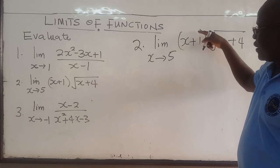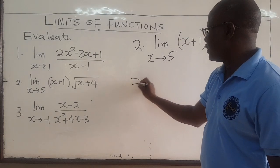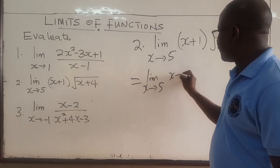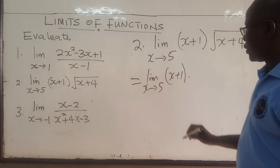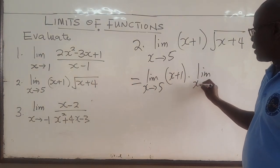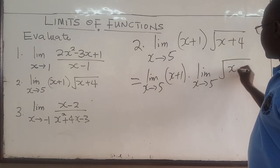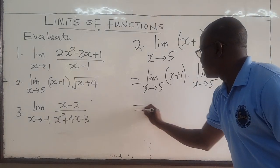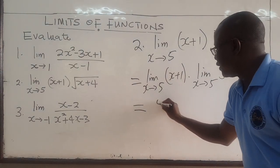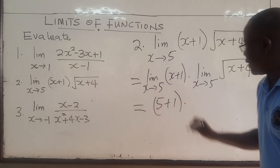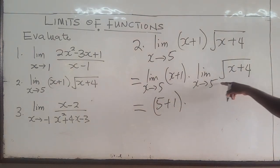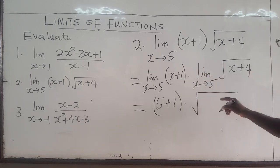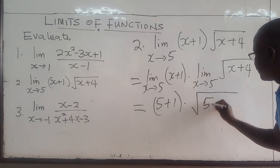So you can find the limit of this times the limit of that. This can be written as the limit as x approaches 5 of (x plus 1), multiplied by the limit as x approaches 5 of the square root of (x plus 4). We can plug 5 in here to get 5 plus 1, and for the square root we can take the limit inside, getting the square root of the limit as x goes to 5, which is 5 plus 4.